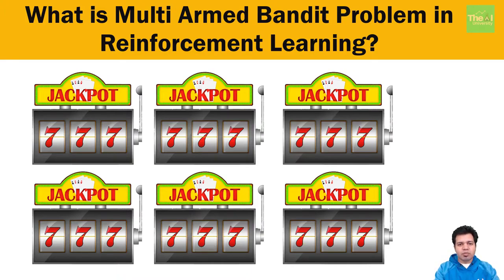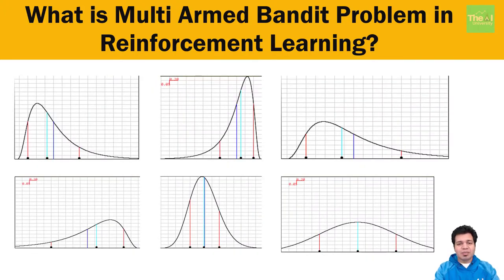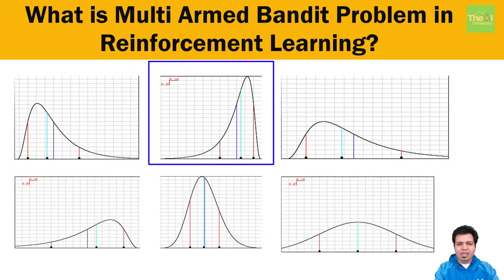Let's replace the slot machines with their associated distributions. The best distribution here is the one in blue in the middle — it is the most left-skewed and has the highest mean, median, and mode. Had you been aware of all the distributions, you could simply play that middle slot machine all the time to maximize your winnings.